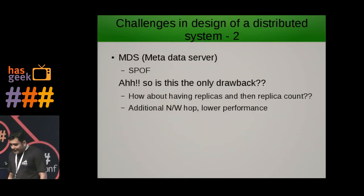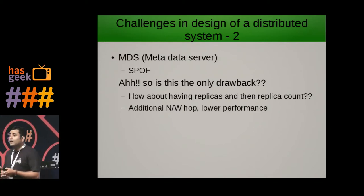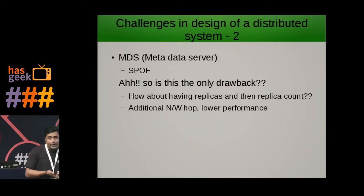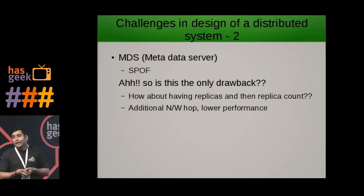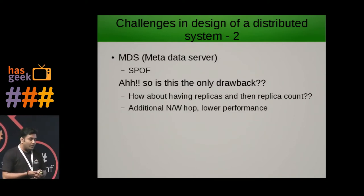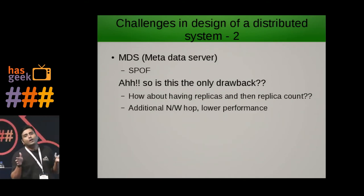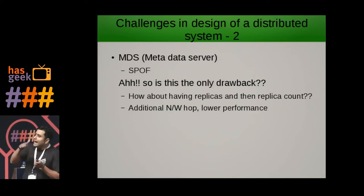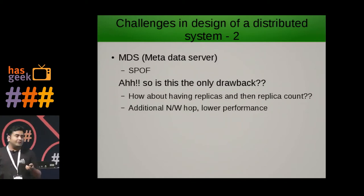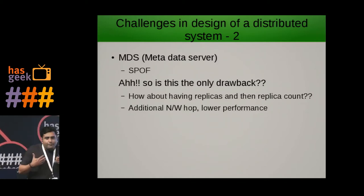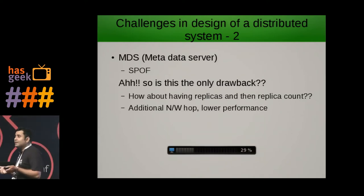With a dedicated metadata server (MDS), a single MDS is a single point of failure — though we can address that with HA pairs in the form of replica 2 or replica 3. However, it incurs additional network hops because the client doesn't know which node to send the request to, and for each request that node has to talk to the dedicated MDS server, fetch the information, and then proceed. From a personal point of view, this is also not an approach you should go with when thinking about solving scalability in a distributed file system.